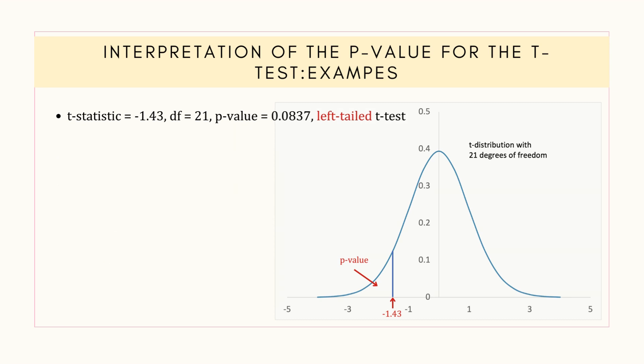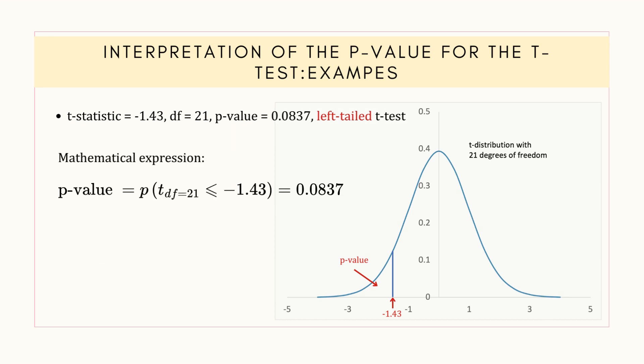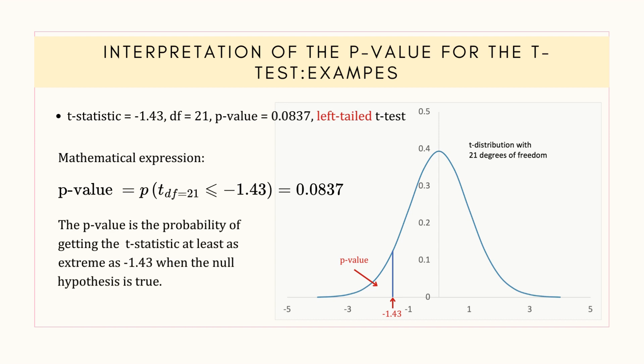Now in this case, the p-value is the probability of getting the t-statistic at least as extreme as minus 1.43 when the null hypothesis is true.